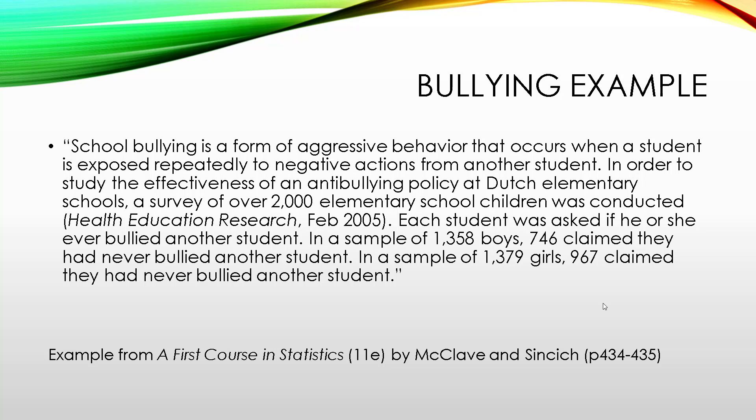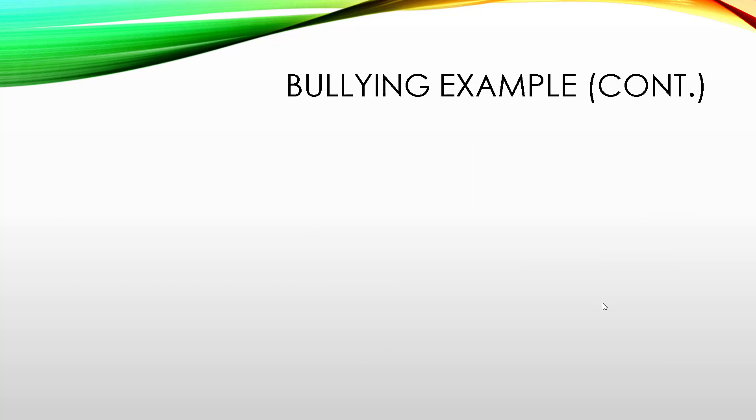Each student was asked if he or she has ever bullied another student. In a sample of 1,358 boys, 746 claimed they have never bullied another student. In a sample of 1,379 girls, 967 claimed they never bullied another student. Our research question is going to be to investigate the difference in proportion of boys versus girls that are bullies. We can do this with a 90% confidence interval. So let us construct a 90% confidence interval for the true difference in the proportion of boys versus girls that are bullies.